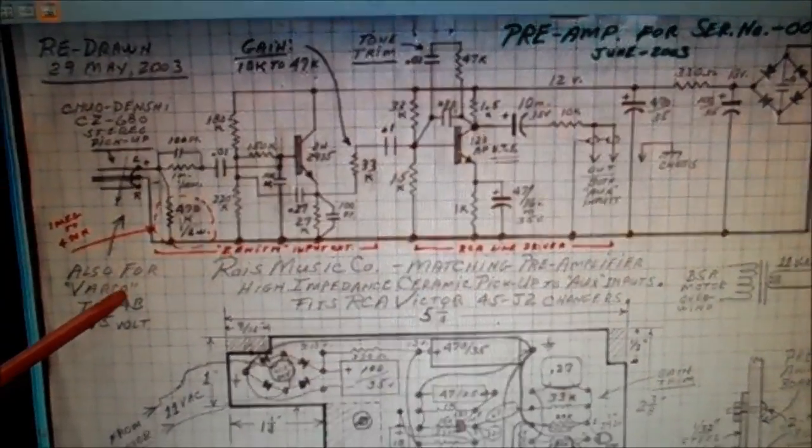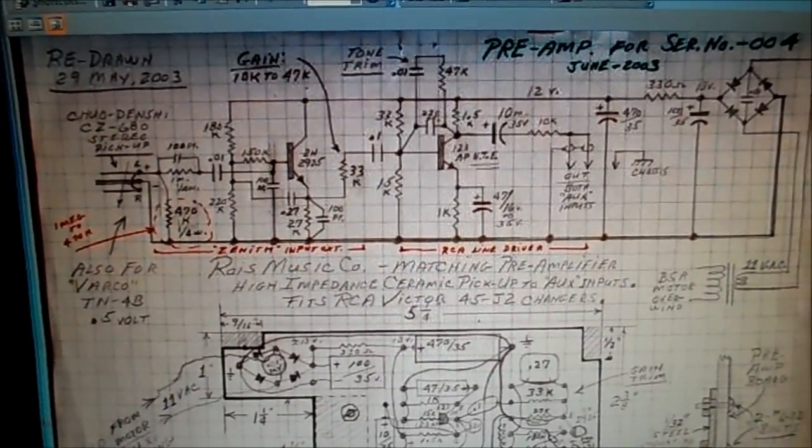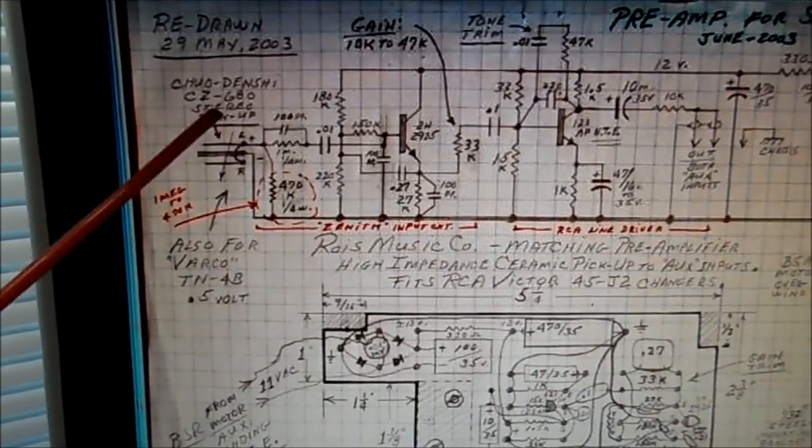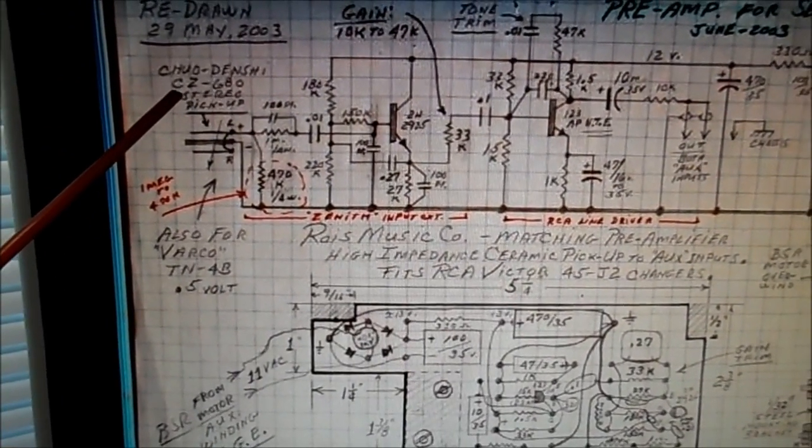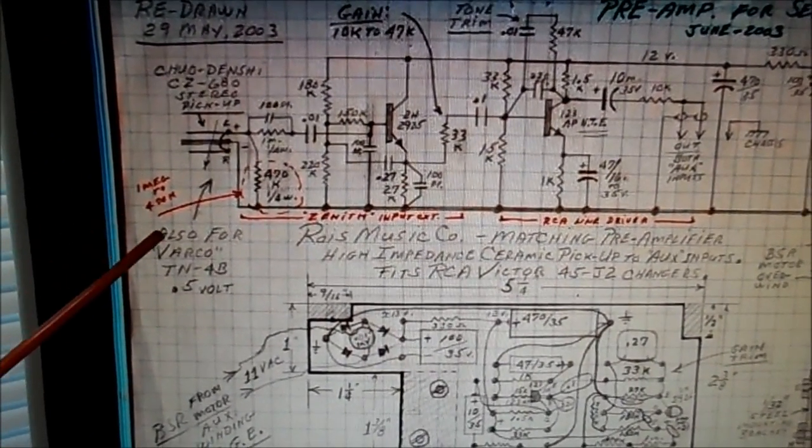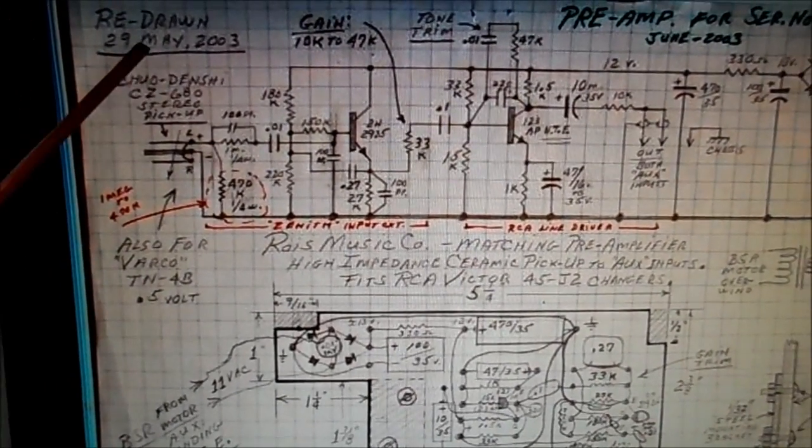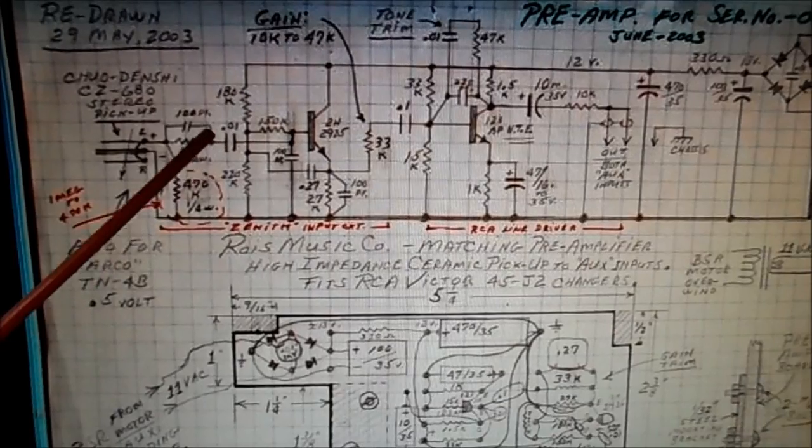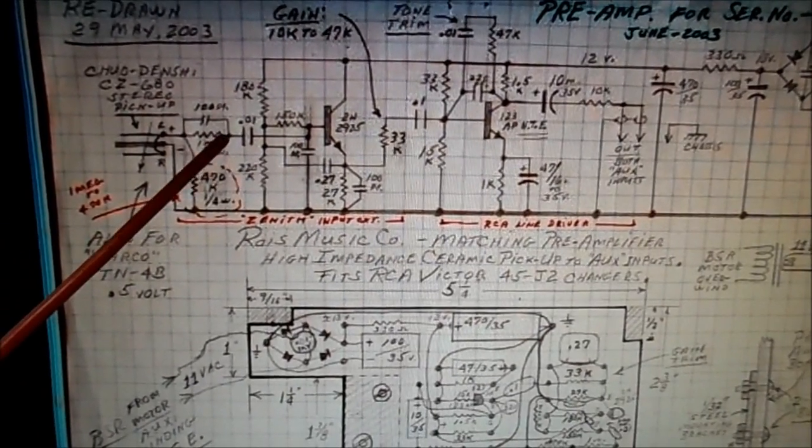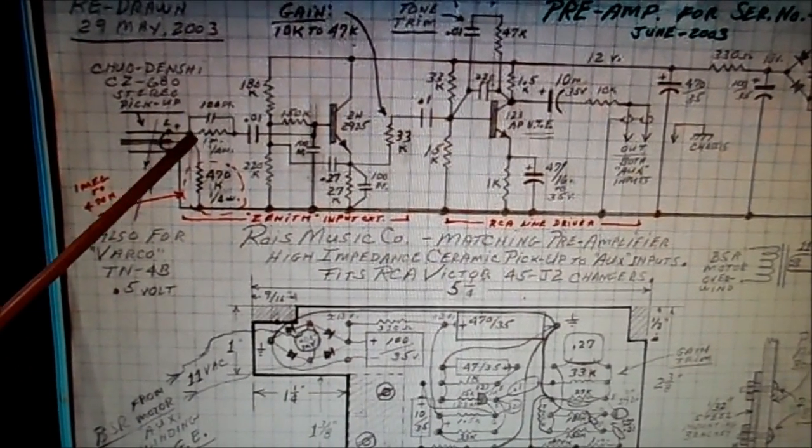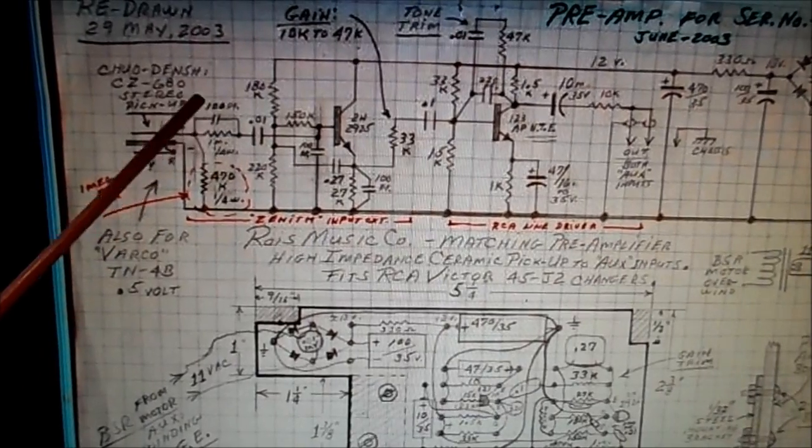This is what gave me the idea for this emitter follower after researching it. Let me get some focus. You can screenshot this or pause to get a look at it. Here you would have the CZ680 ceramic input and also for the Varco TN4B. This is your input circuit here.